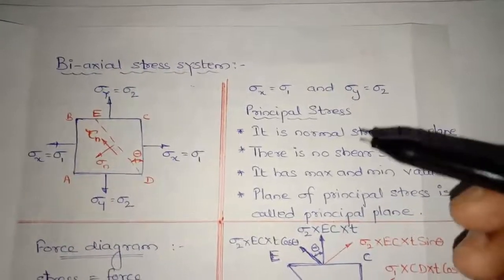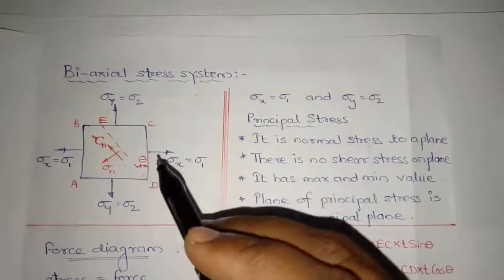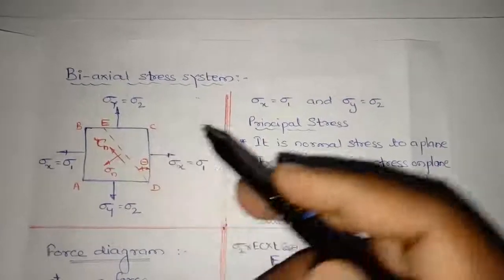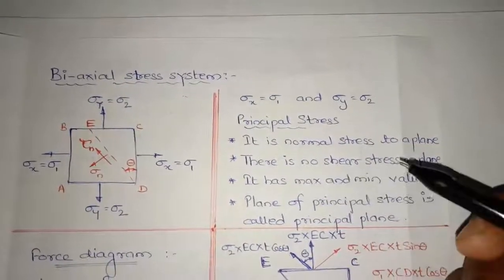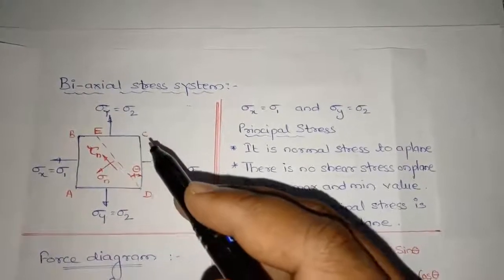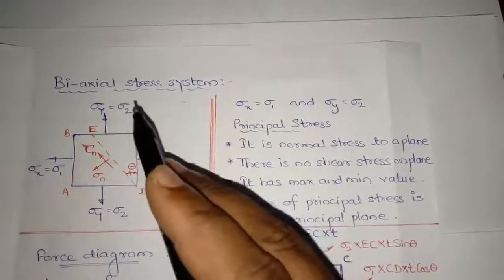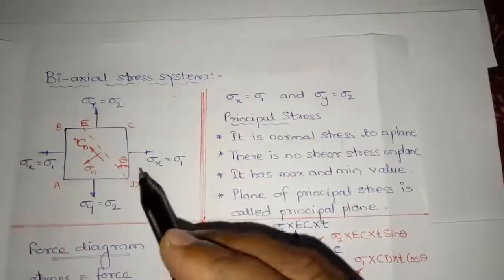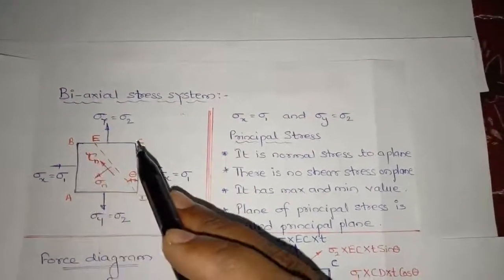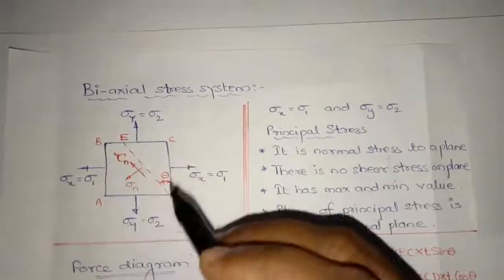Let us understand what is principal stress. Principal stresses are normal to a plane — sigma x is perpendicular to CD and sigma y is normal to BC. The second condition is there is no shear stress on the plane, so tau, the tangential stress, is not acting on planes BC and CD. Principal stress is a maximum and minimum value, and the plane on which principal stress acts is called the principal plane. Planes BC and CD are referred to as principal planes.